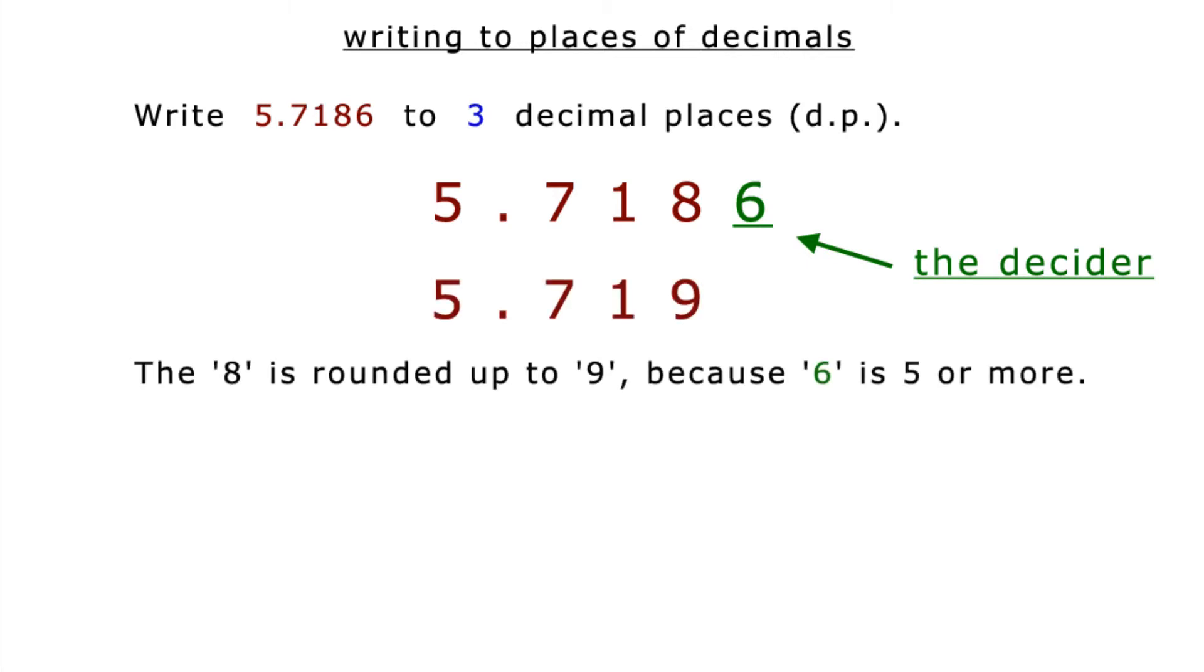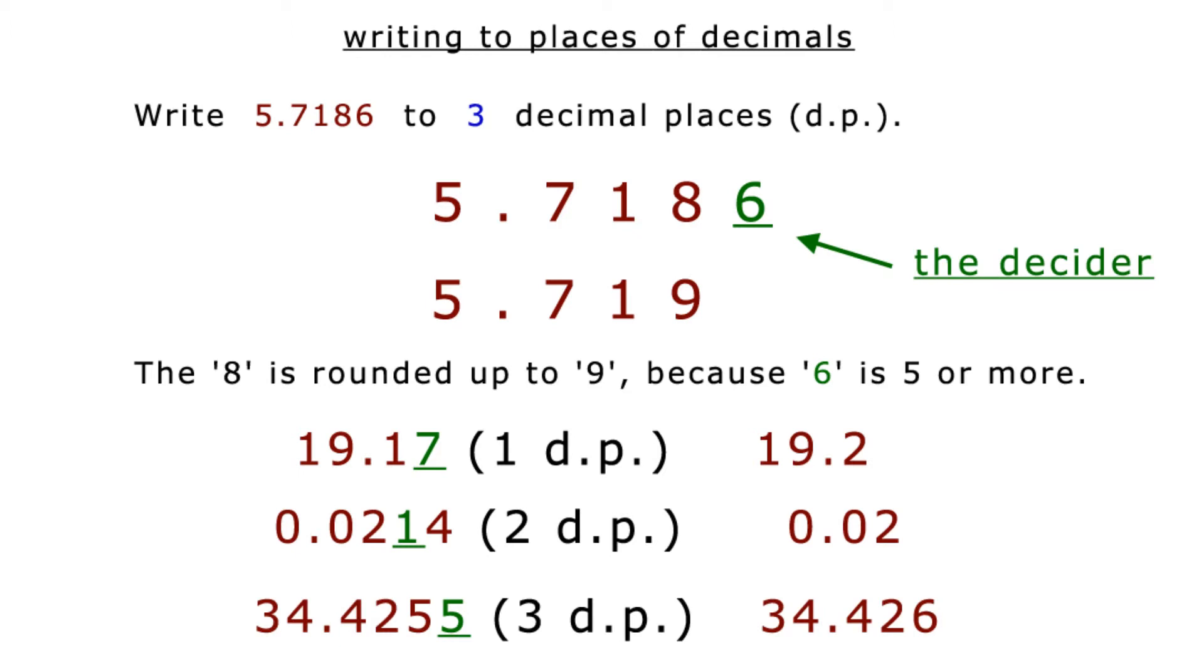The 8 is rounded up to 9 because 6 is 5 or more. Here are some more examples. 19.17 to one decimal place is 19.2. 0.0214 to two decimal places is 0.02. 34.4255 to three decimal places is 34.426. I hope this little aside tutorial has helped you out. And now to the problems.